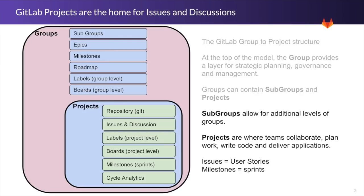When talking Agile in GitLab terminology, we call user stories 'issues.' For people already familiar with issues, you can keep moving along with that term. Milestones are the time box capability — in the case of Scrum, you build out sprints using that milestone feature.